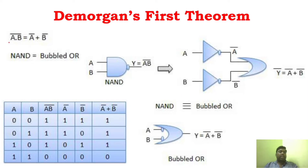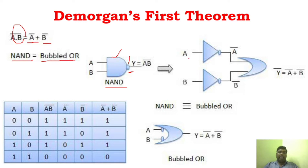You can see here: A·B whole bar is equal to Ā + B̄. As I said, A·B can be called NAND and the right-hand side can be called bubbled OR. While expressing in gates, A·B is represented as a NAND gate — an AND gate followed by a NOT gate. Similarly, on the right-hand side, A is inverted to get Ā, B is inverted to get B̄, and the sum of these two is the OR function. So this function is called bubbled OR.